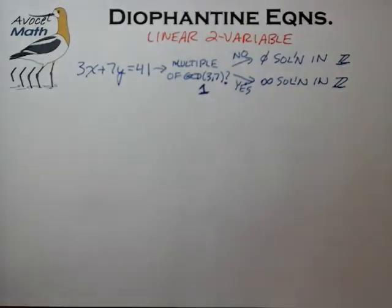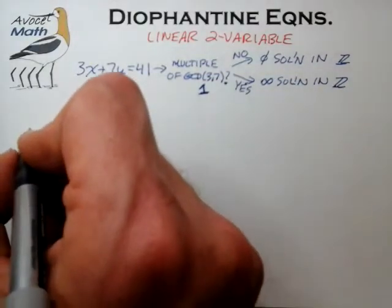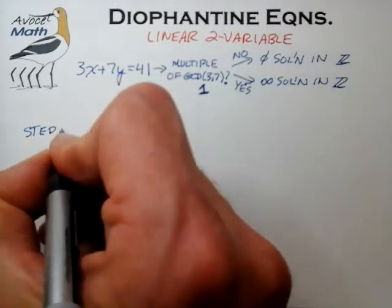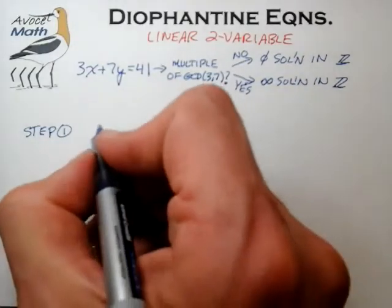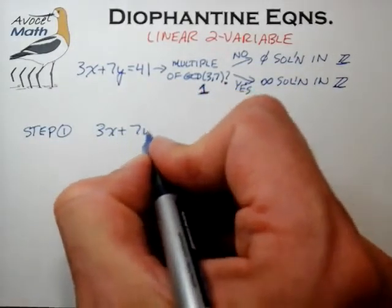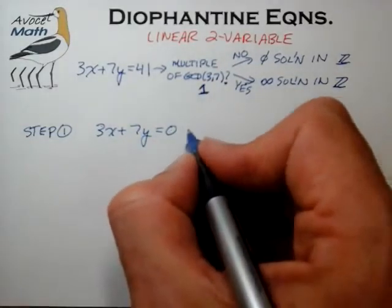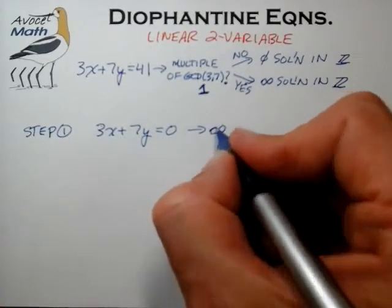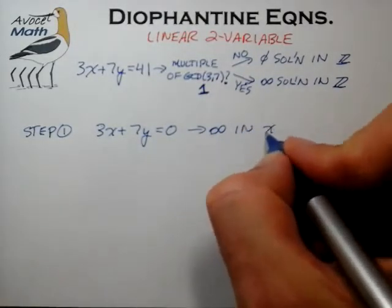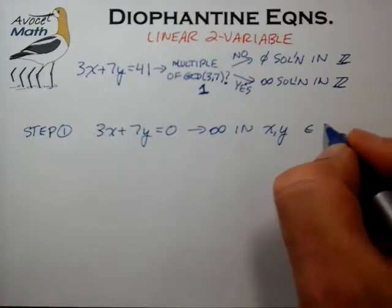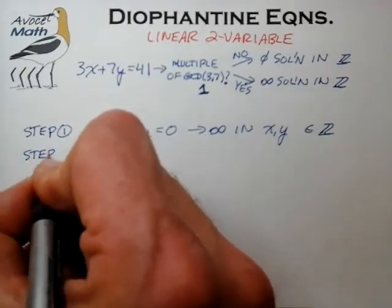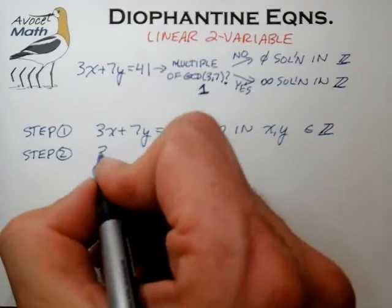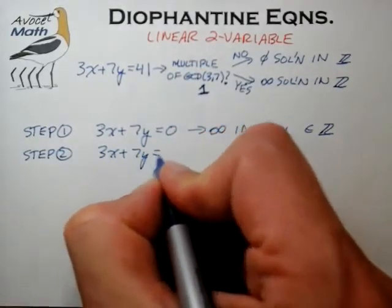For our example case, the constant term is a multiple of the greatest common divisor, so we are in the yes branch and we know there are an infinite number of solutions in Z. The next steps are to find and characterize that infinite solution set. We'll use a two-step process. Step one is to consider the equation where we make the constant term zero — that is, 3x plus 7y equals 0 — and seek the infinite solutions to that equation in x and y, with all elements drawn from the integers Z.